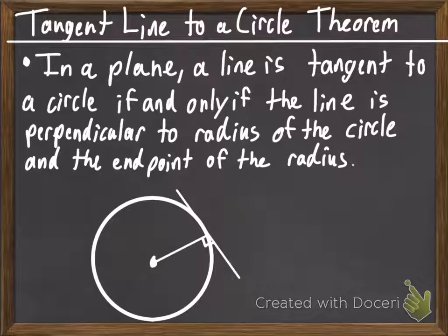if and only if, that's big, the line is perpendicular to the radius of the circle at the endpoint of the radius. So, the only way that this white line here can be tangent to this circle is if we take the radius,